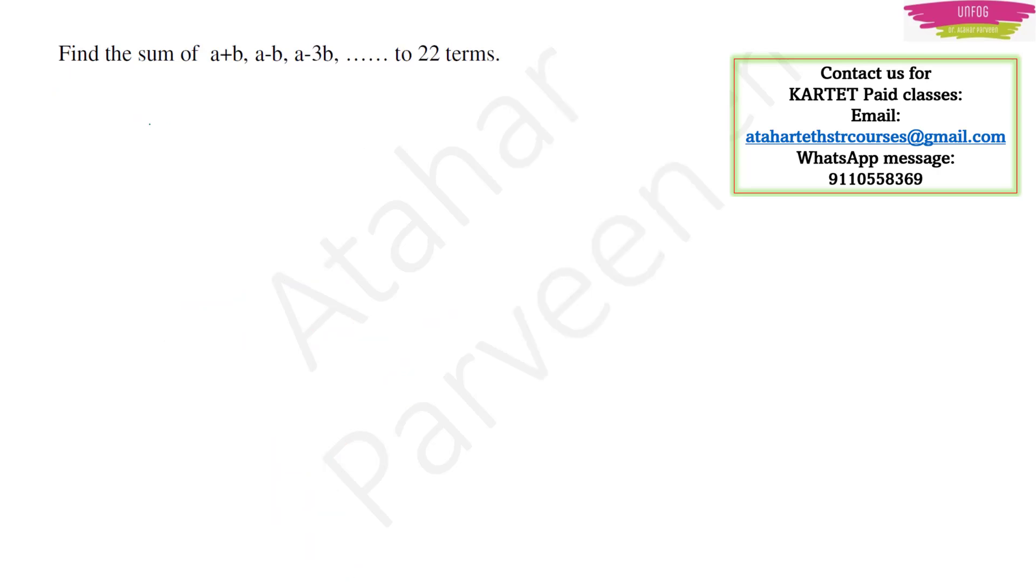Next important and expected question from the difficulty level point of view. In case they ask a difficult question, they may ask a question like this. Find the sum of a plus b comma a minus b comma a minus 3b till 22 terms. In this type of a question, first you see the arithmetic progression and find out the first term. First term is a plus b now.